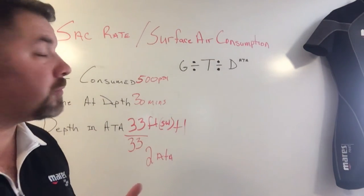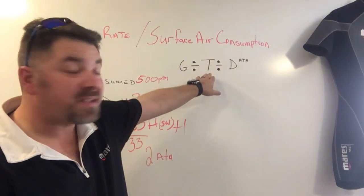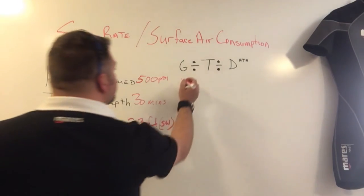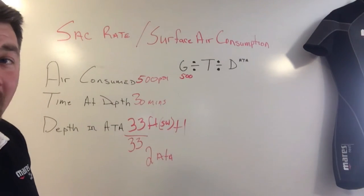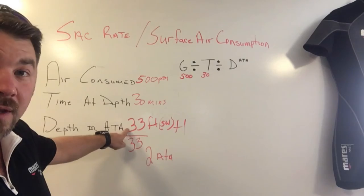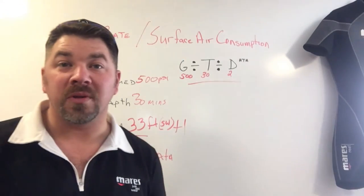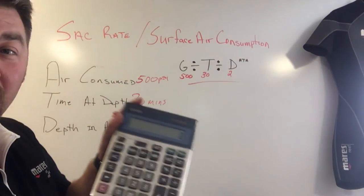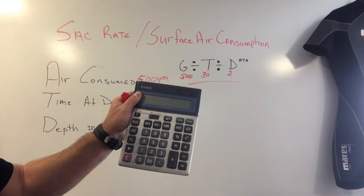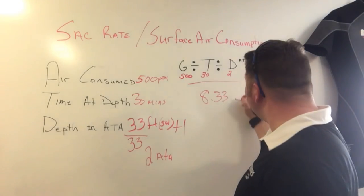Now with all three variables we can apply the SAC rate formula. It's simple division: take gas consumed (500 PSI), divide by time underwater (30 minutes), then divide by the atmospheric pressure at depth (2 ATA for 33 feet of saltwater). Using a calculator: 500 ÷ 30 ÷ 2 gives us 8.33.